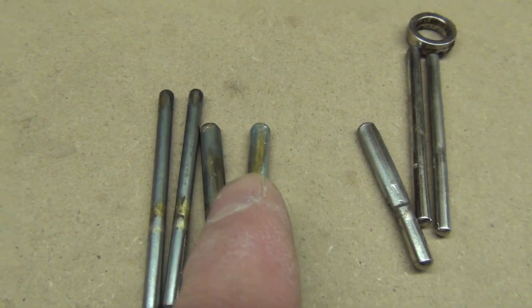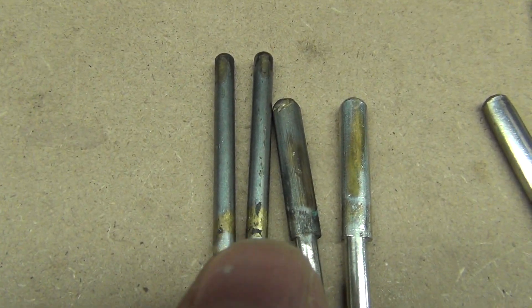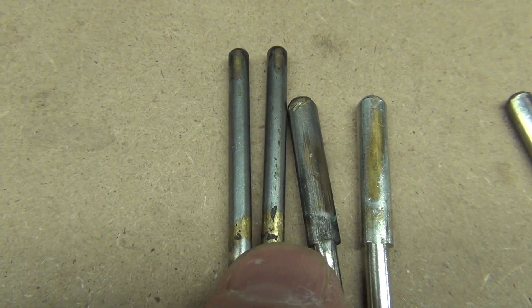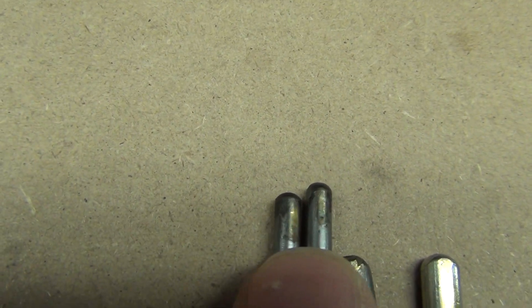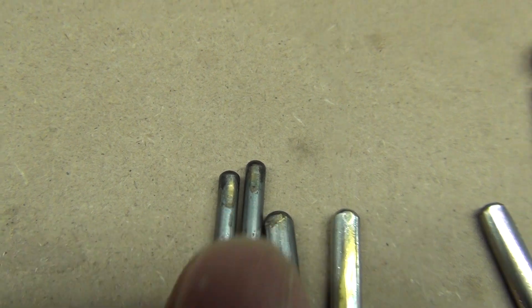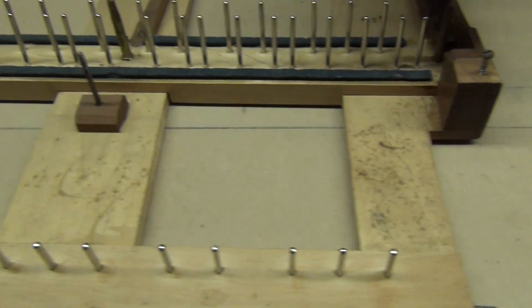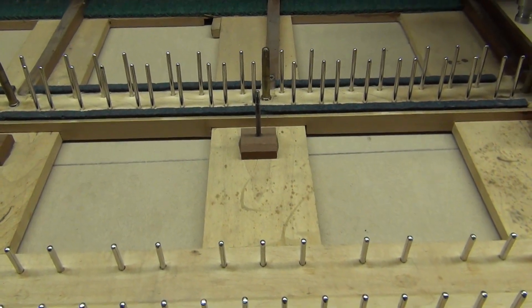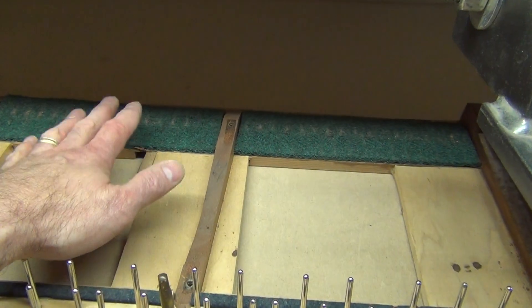So this creates a lot of friction at the point where the key balance hole is and at the point where the bushing is. That's repinning the keyframe. We'll replace the back rail cloth next.